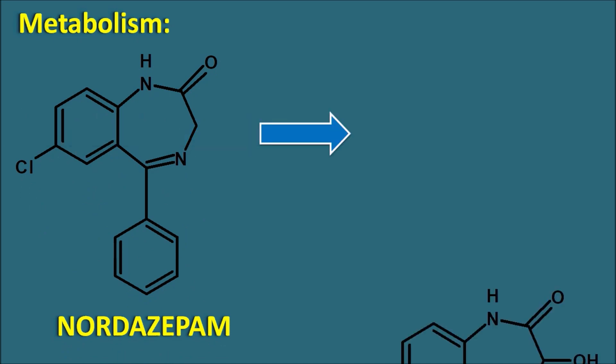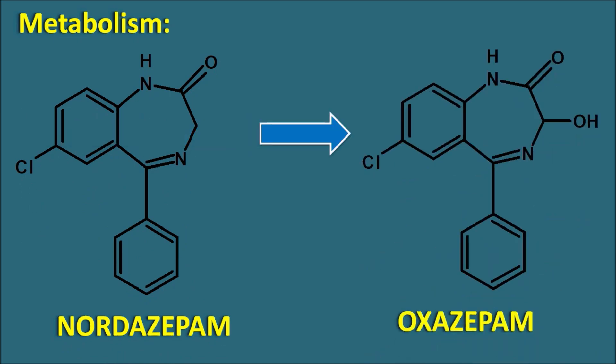Nordazepam can also be converted into Oxazepam because Nordazepam is not hydrophilic. Hydrophilicity is increased by introduction of an OH group at the third position — 3-hydroxylation is an important metabolic pathway for many benzodiazepines. Nordazepam is converted into Oxazepam, which is also an active metabolite, but Oxazepam is a short-acting benzodiazepine that undergoes conjugation by glucuronidation and is excreted in the urine. The action of Chlordiazepoxide is related to the parent drug and its two active metabolites, Demoxepam and Nordazepam.